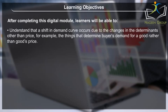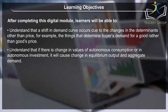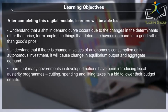Understand that if there is a change in values of autonomous consumption or autonomous investment, it will cause a change in equilibrium output and aggregate demand. Learn that many governments in developed nations have been introducing fiscal austerity programs, cutting spending and lifting taxes in a bid to lower their budget deficits.